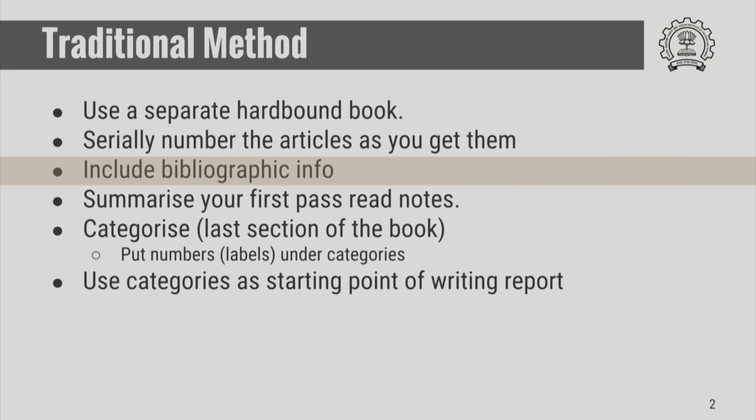Under each article, you first write the bibliographic information, which is the name of the author, the journal name, the volume and the page number. If it is a book, you write the name of the book, the title of the book, author, publisher and the year of publication. All these are important for you to come back to this book and locate the article later.